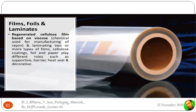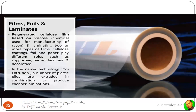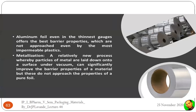Films and laminates are also used. Regenerated cellulose film based on viscose is the chemical used for manufacturing films and laminating two or more types of films. Cellulose coatings, foil, and paper play different roles such as supportive, barrier, heat seal, and decorative. In newer technology, co-extrusion allows a number of plastic films to be extruded in combination to provide cheaper laminations.